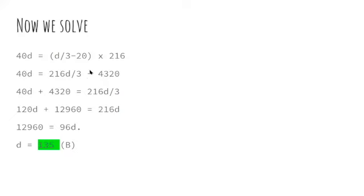And then 40d plus 4,320, because we moved this to the other side, is equal to 216d divided by 3. And then 120d, because times this 3, plus 12,960 is equal to 216d.